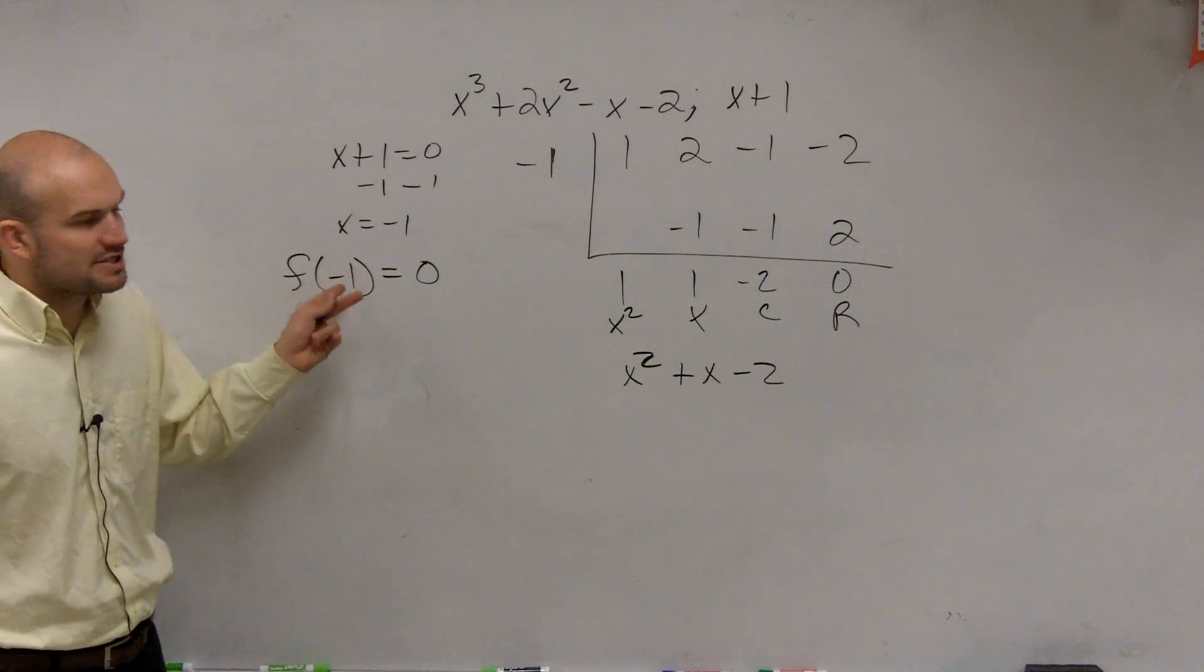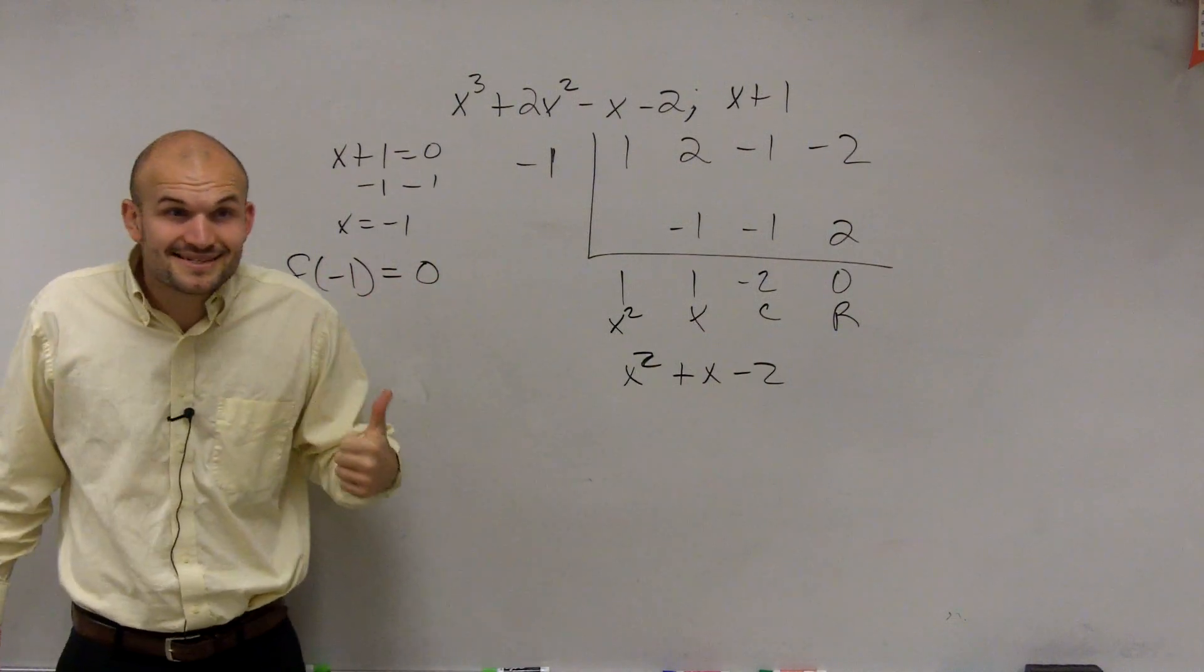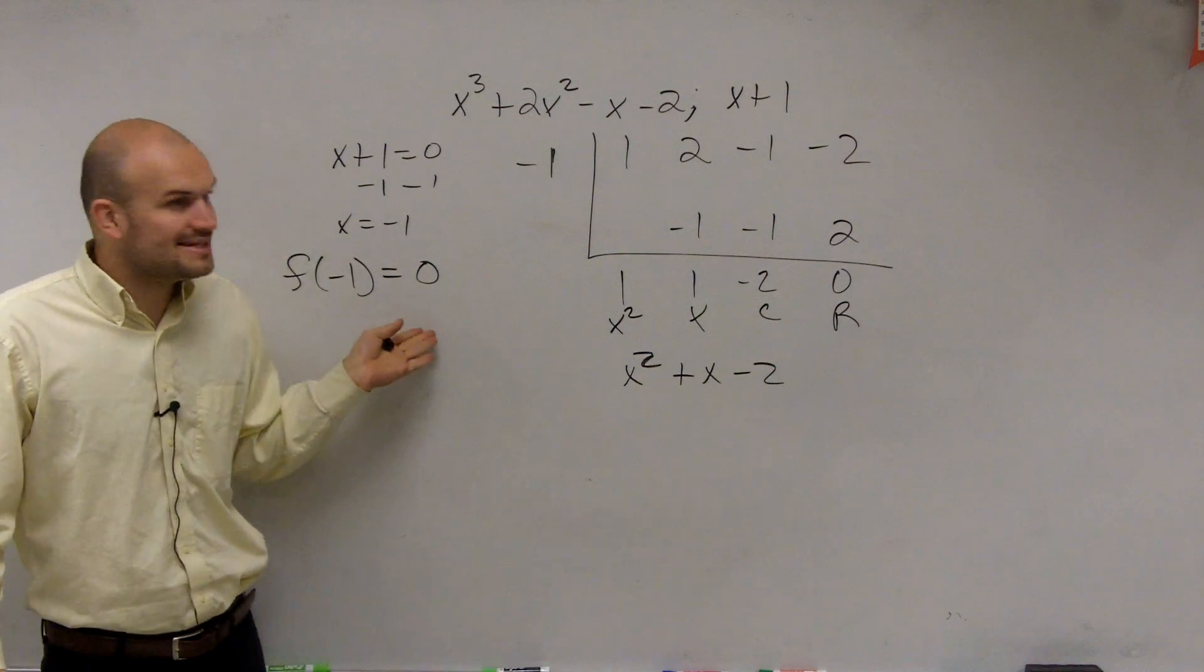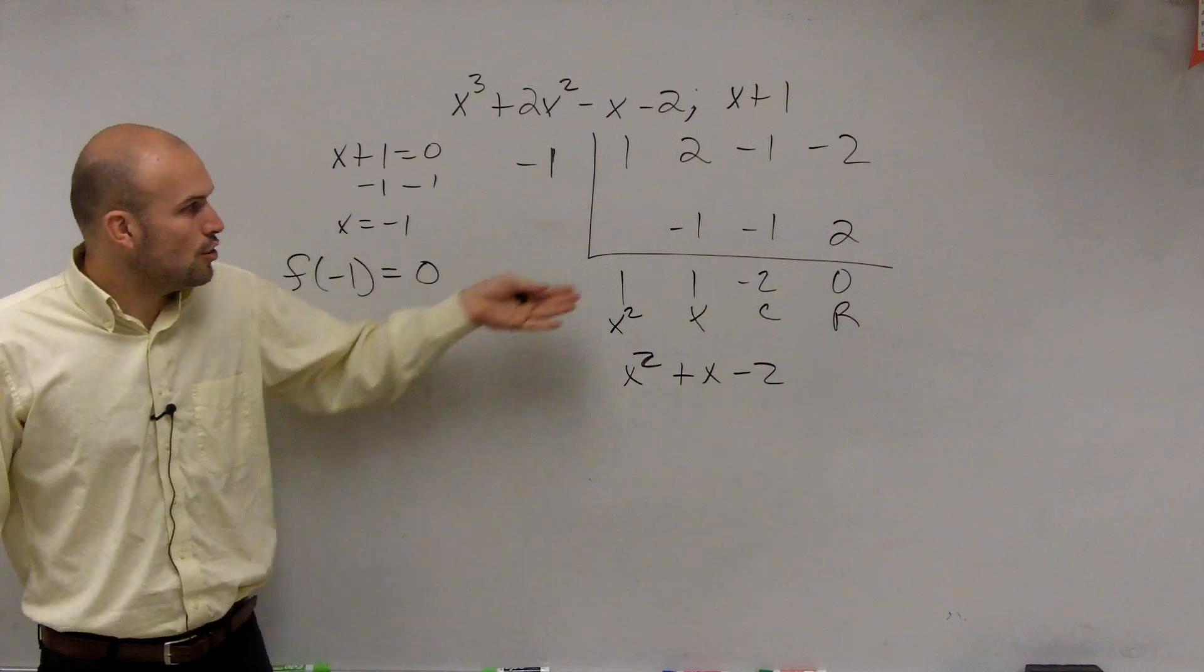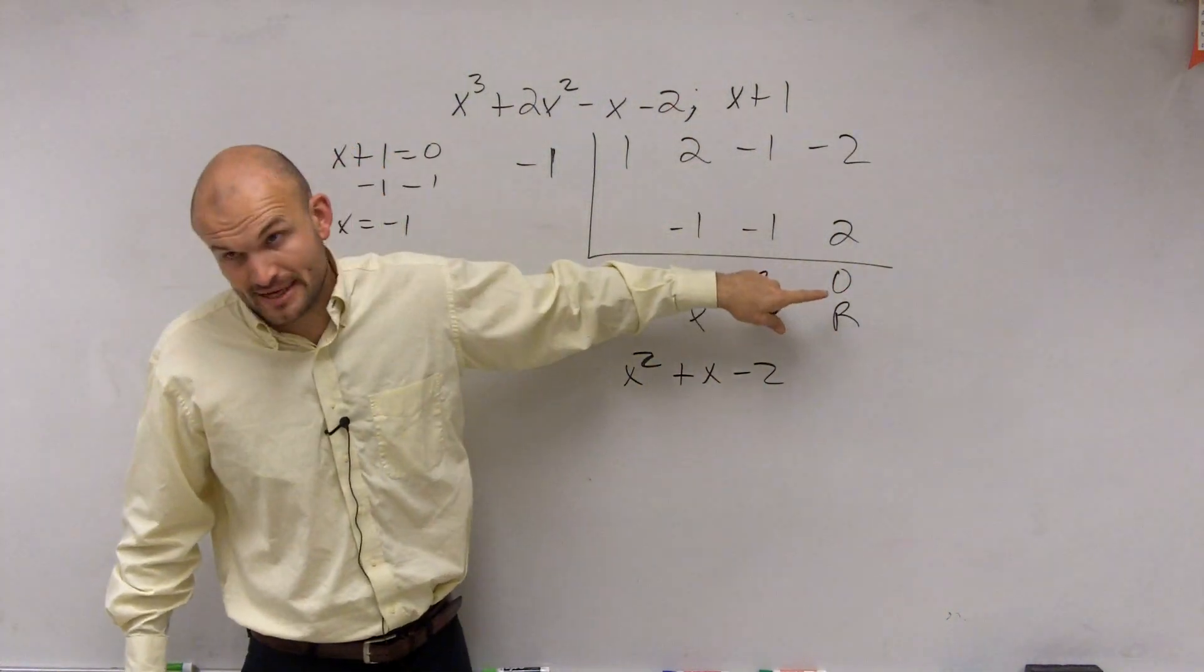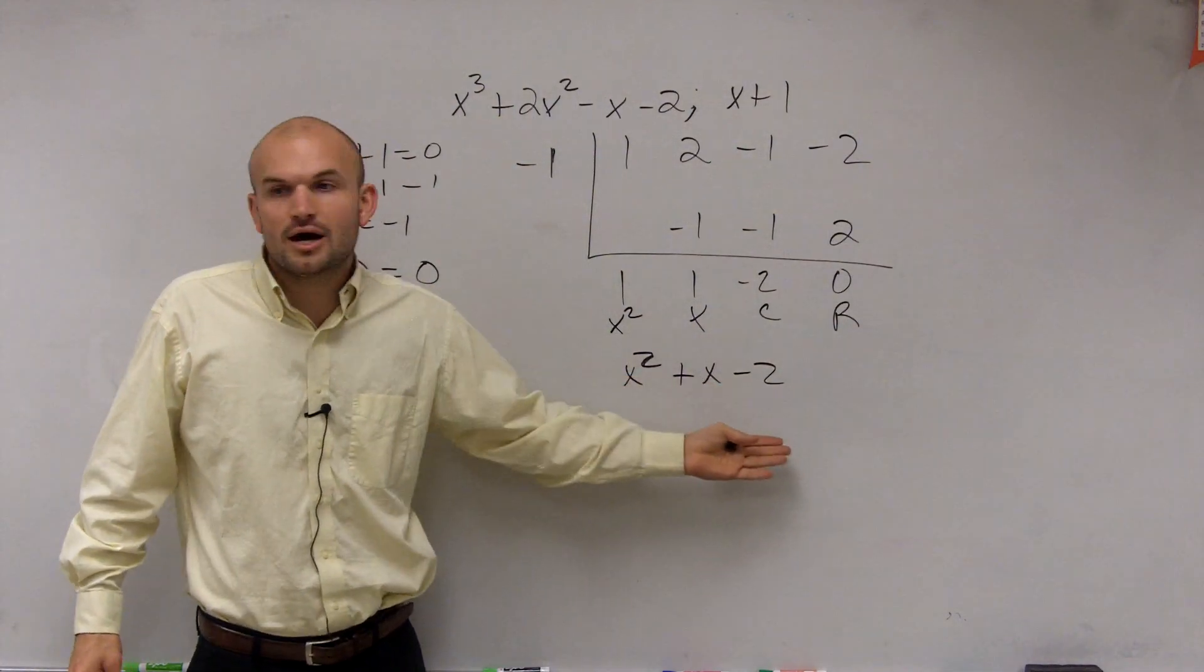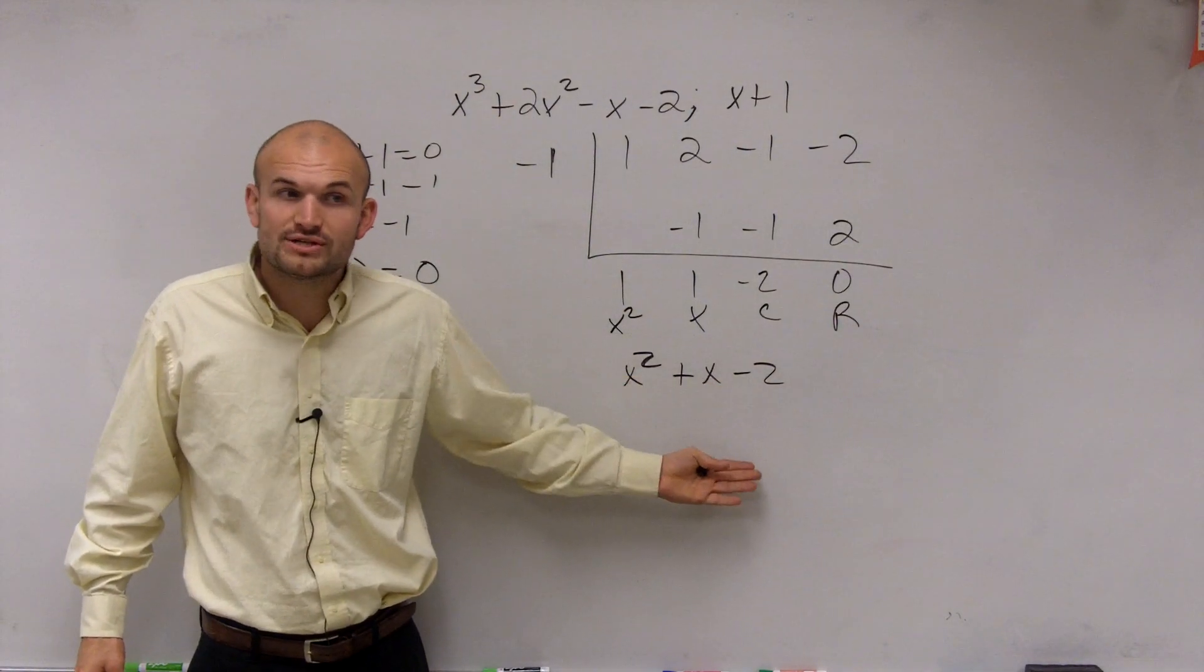Ladies and gentlemen, if we were just to plug in f of negative 1, our answer was going to get 0, which would tell us that it's a factor, but it doesn't give us any remaining factors. When we do synthetic division, we prove that it's a factor because it has a remainder of 0. But then we also get our answer, our quotient.